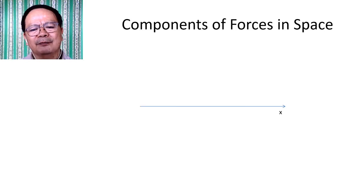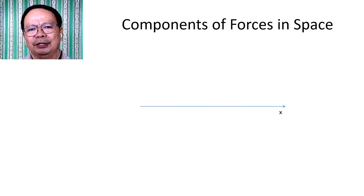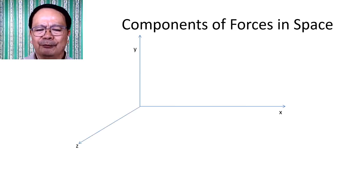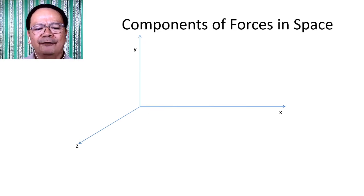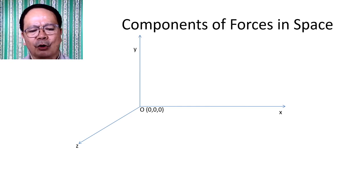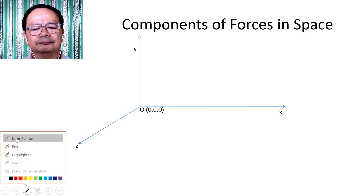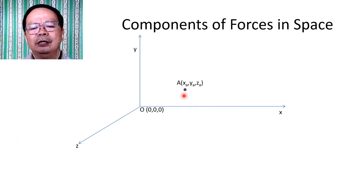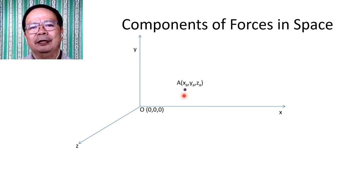To start with, let us imagine that we have a space defined by the three mutually perpendicular directions: the X, Y, and Z axes. From this space, we have the origin defined by the intersection of these three axes, whose coordinate is (0, 0, 0). Assuming that in this space, we have a point whose coordinate is defined by X_A, Y_A, Z_A, and the point is given by symbol A.